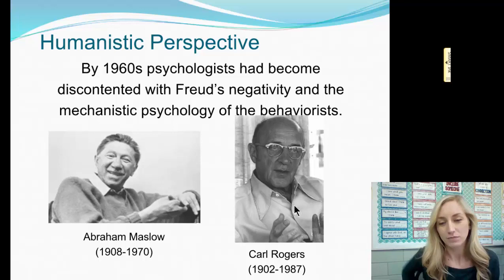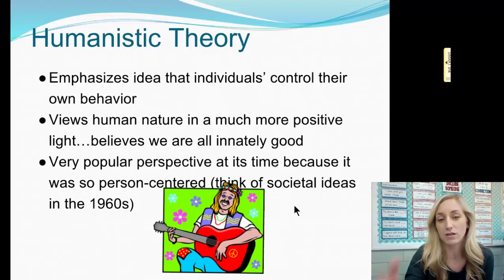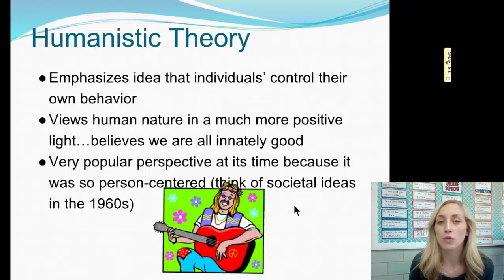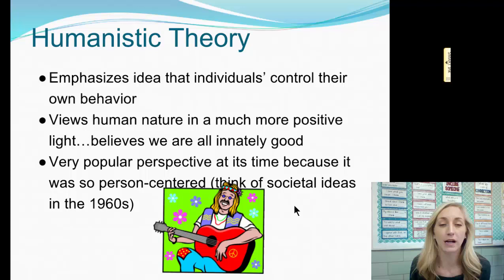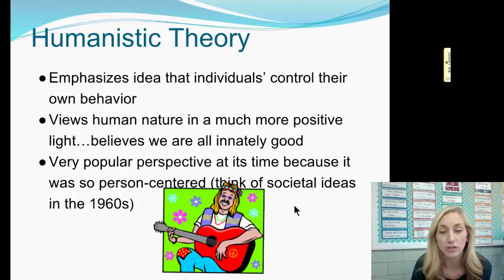So Maslow and Carl Rogers gave a more positive spin to things, which was very welcomed at the time. The humanistic theory emphasizes the idea that individuals control their own behavior and aren't simply controllable by methods of operant conditioning. It views human nature in a much more positive light, believing we are all innately good, whereas the psychoanalytic perspective believes we're all innately bad. It was a very popular perspective because it was so person-centered.